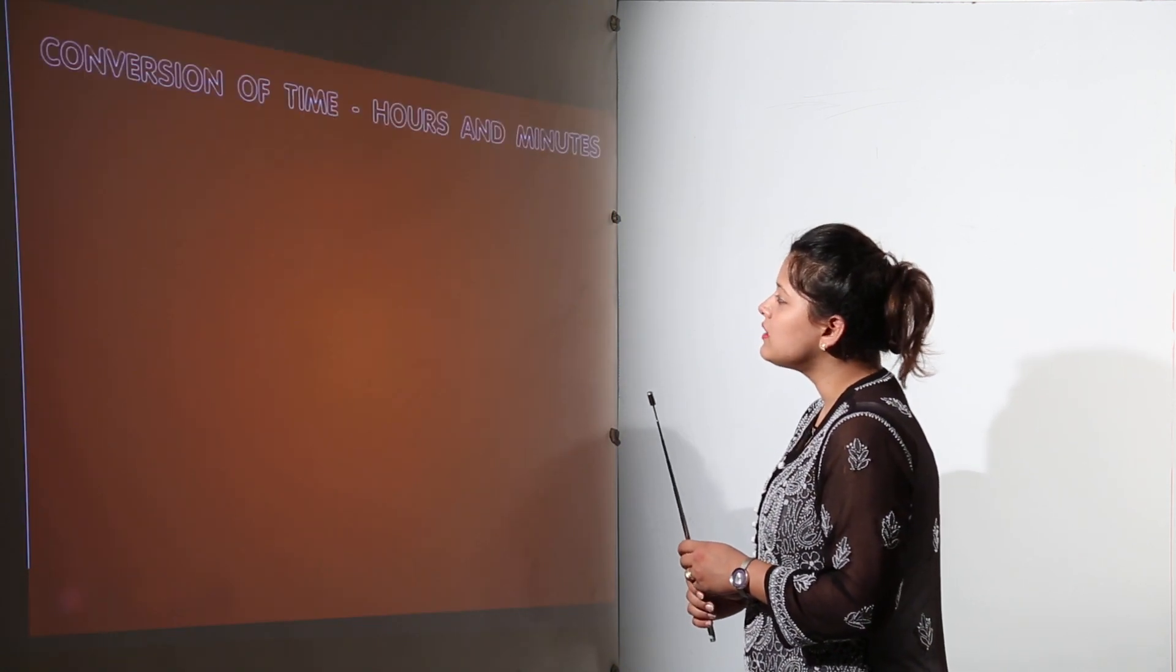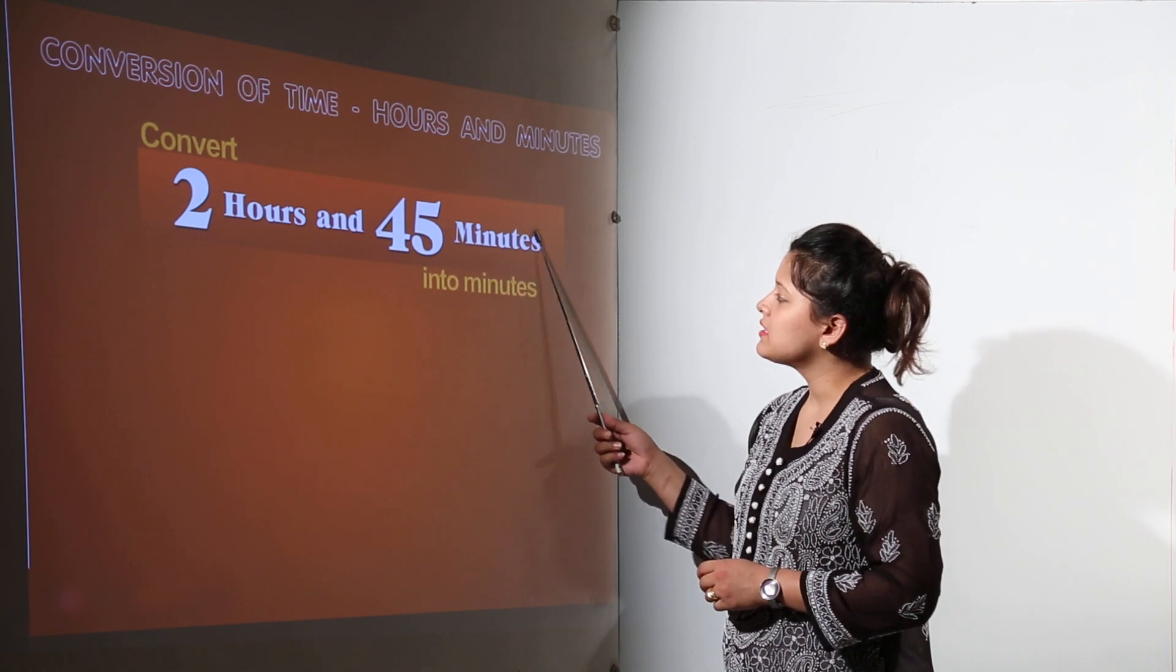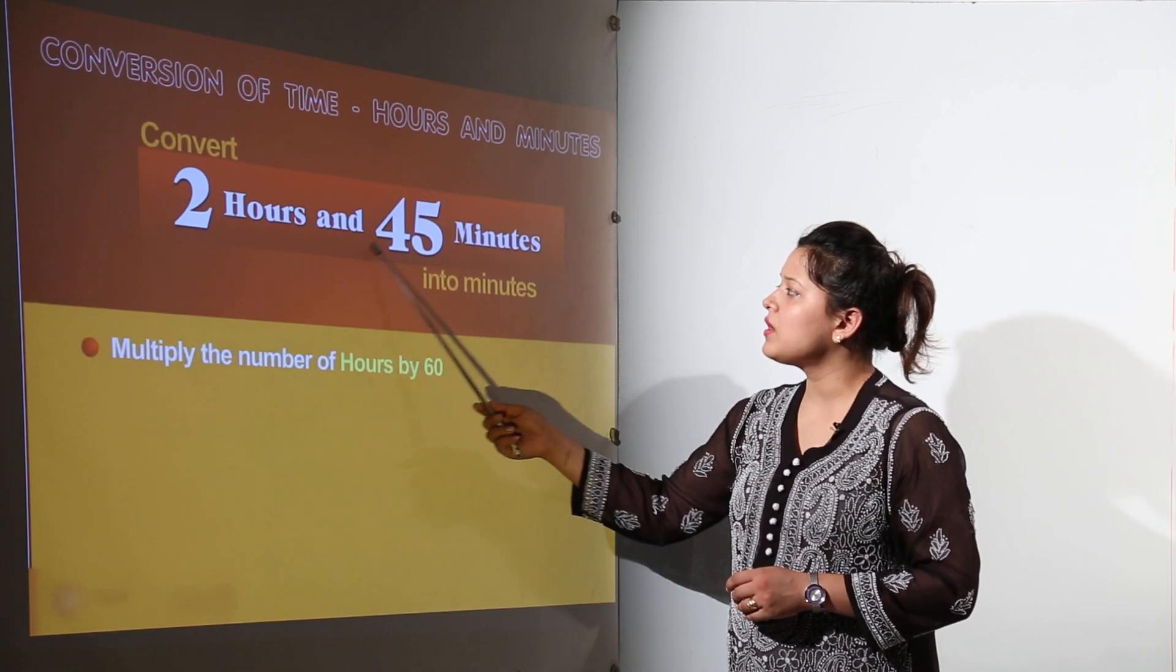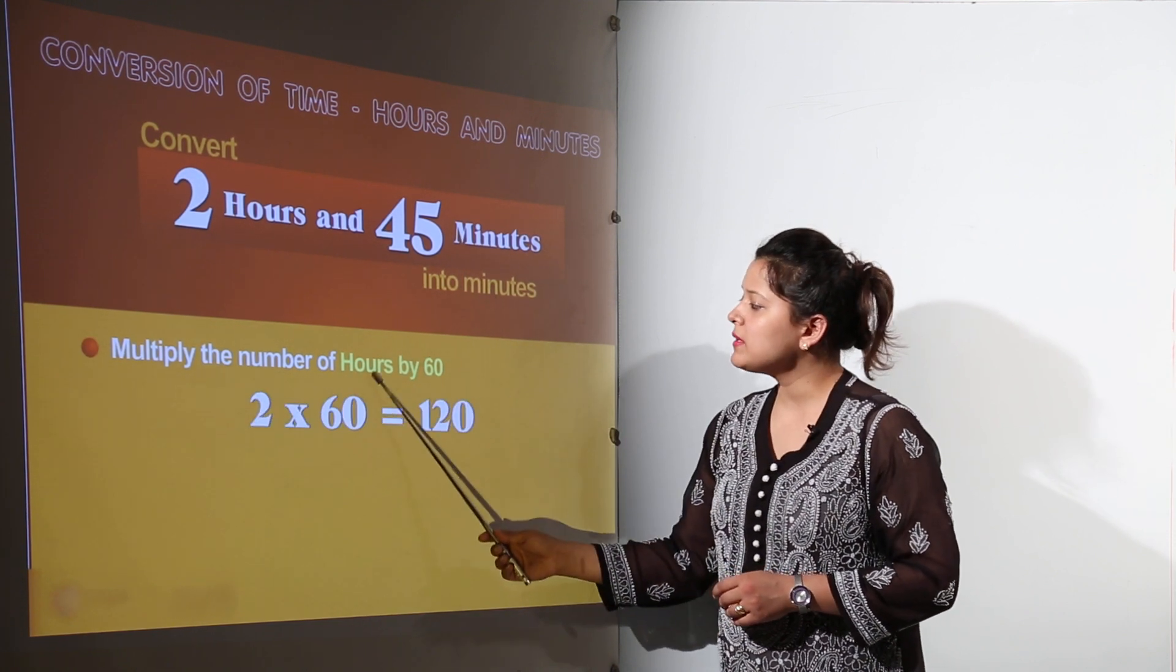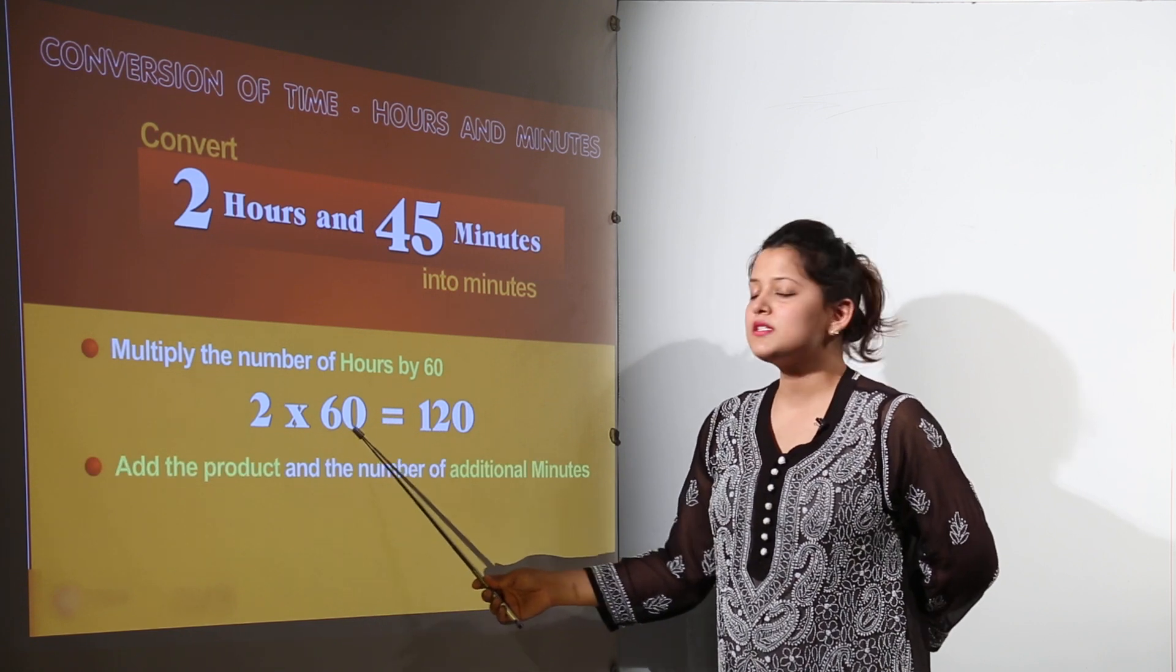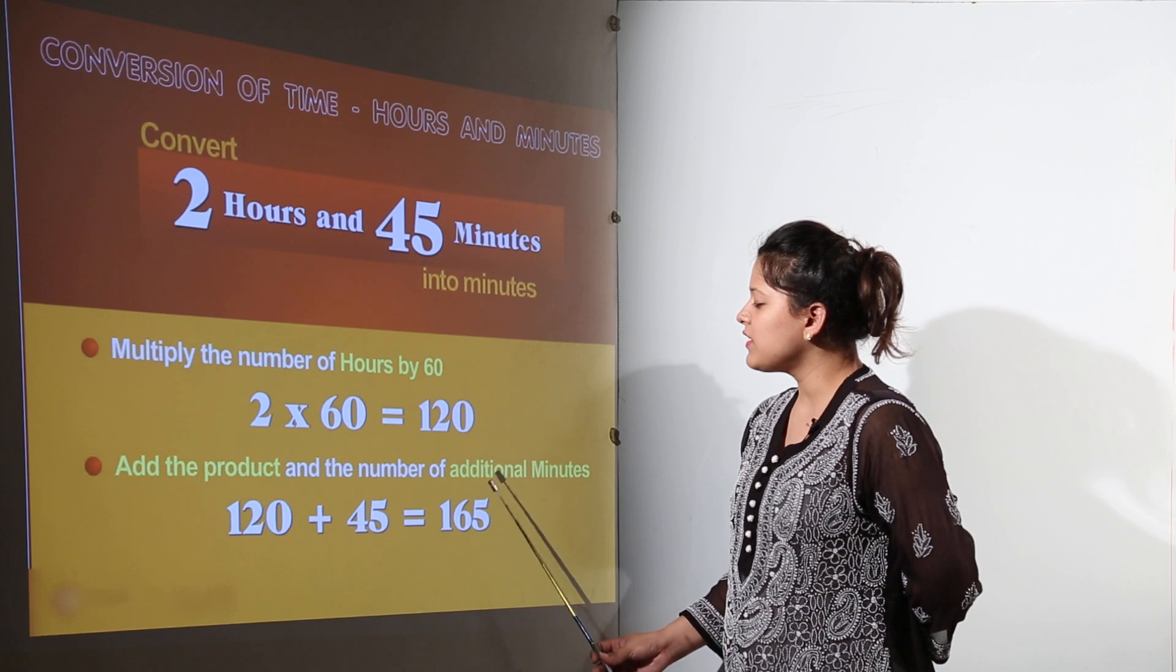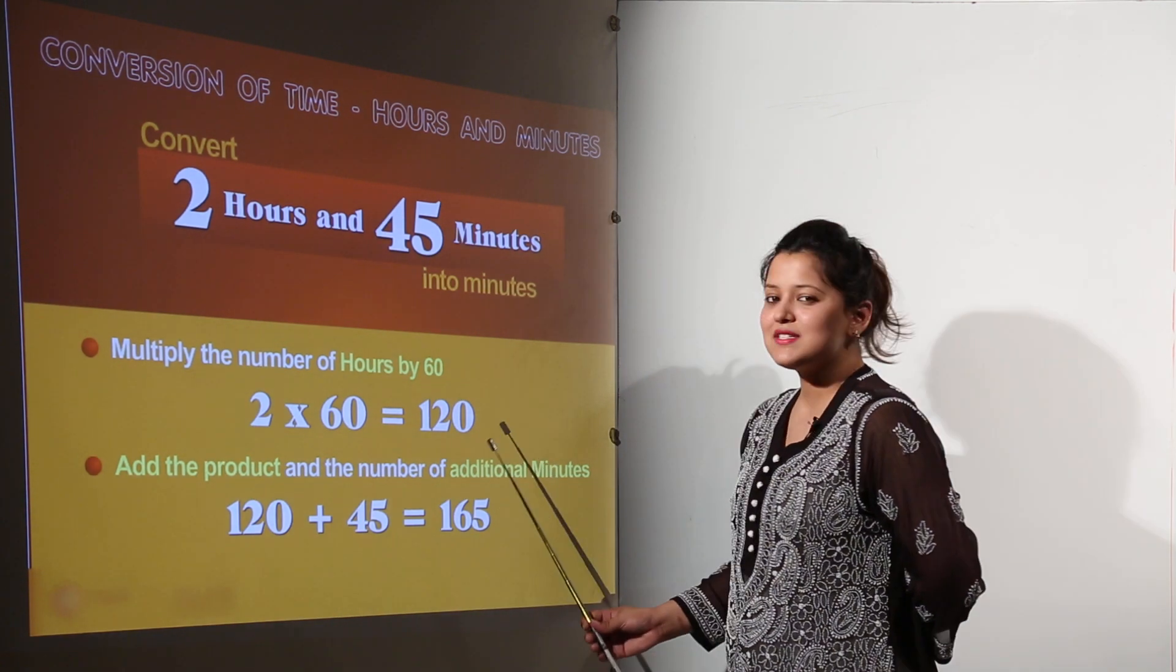We shall learn about the conversion of 2 hours and 45 minutes. The conversion of 2 hours and 45 minutes into minutes would be when we multiply the hours by 60 because we know 1 hour has 60 minutes. 2 into 60 makes 120. So 120 plus 45 makes 165 minutes in total.